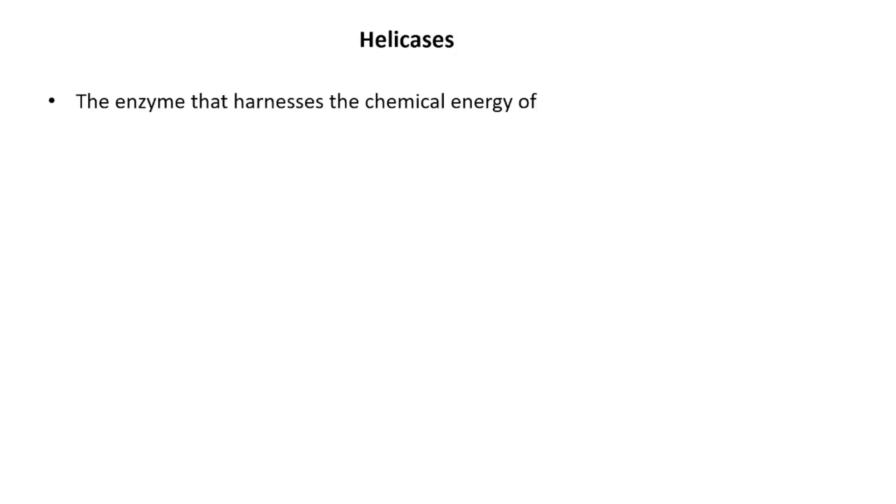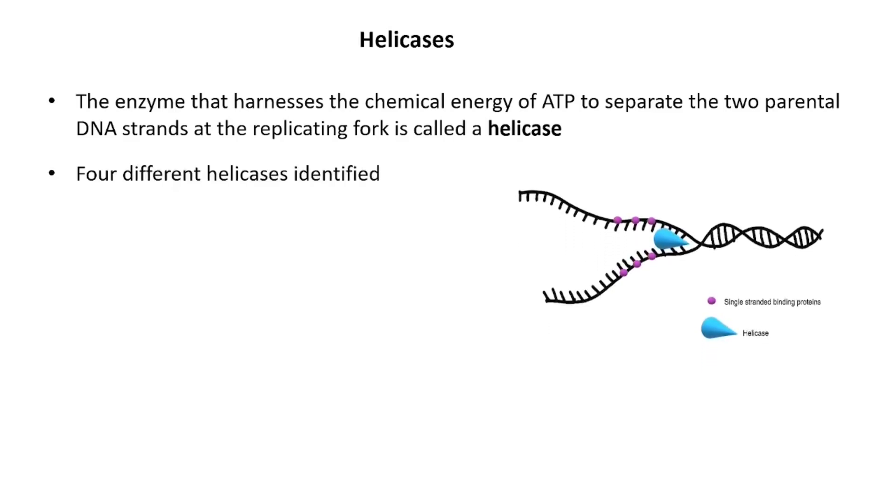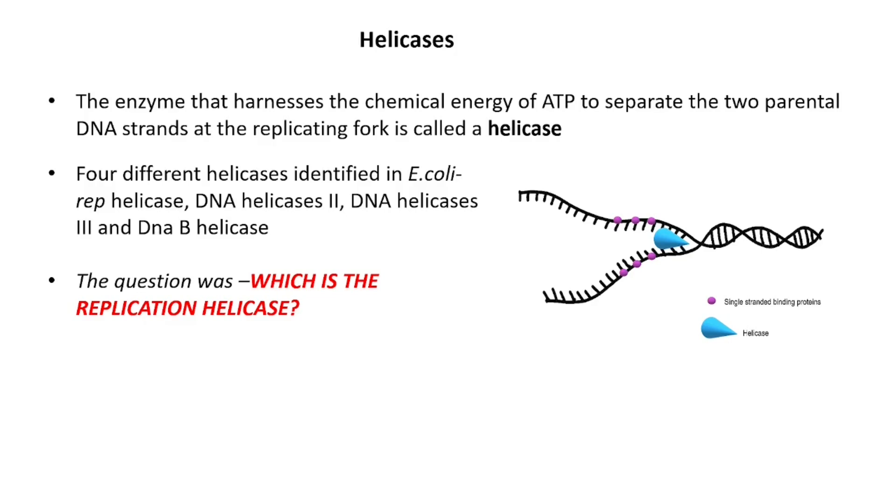The enzyme that harnesses the chemical energy of ATP to separate the two parental strands at the replication fork is called the helicase. At least four different DNA helicases have been identified in E. coli cells: rep helicase, DNA helicase 2, DNA helicase 3, and DNA B helicase. The question was finding out which of these is involved in DNA replication. The first three to be investigated could be mutated without inhibiting cellular multiplication. This made it unlikely that any of these three enzymes could participate in something as vital to cell survival as DNA replication.